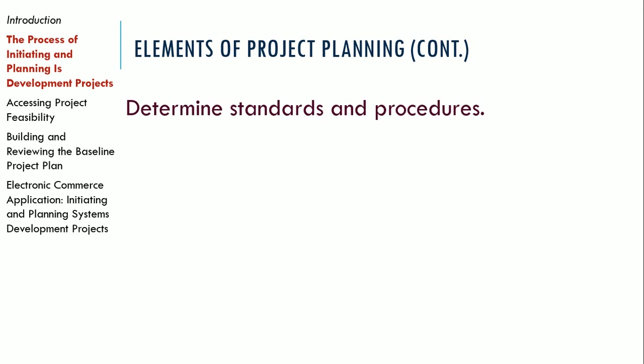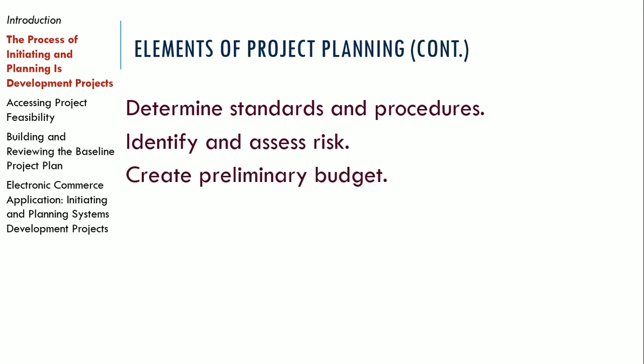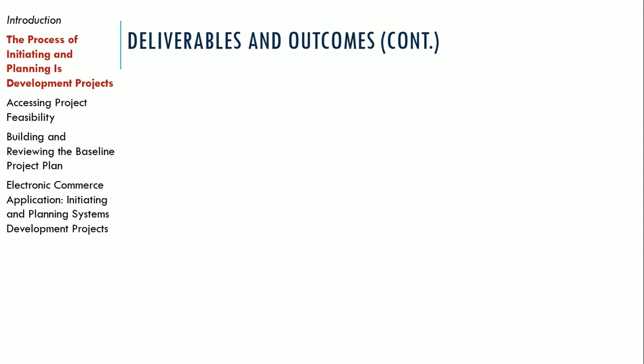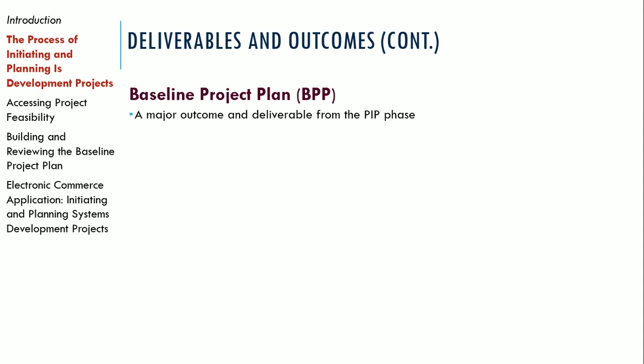We're going to describe the project scope and also talk about the alternatives considered, as well as the feasibility of the project. We'll divide the project into tasks, estimate the resource requirements, develop a preliminary schedule, and create a communication plan. A lot of this overlaps with project management activities, and we can use the same tools — the work breakdown structure, the network diagram, the Gantt chart — all that stuff. The elements of project planning include determining standards and procedures, identifying and assessing risk, creating preliminary budgets, developing a statement of work, and setting a baseline project plan. The outcome and deliverable of all of this is the baseline project plan — the end game to the planning phase of the SDLC.